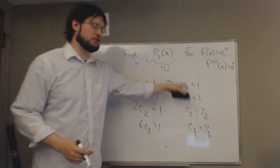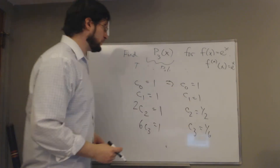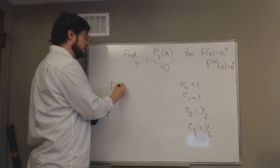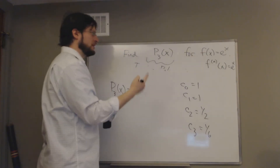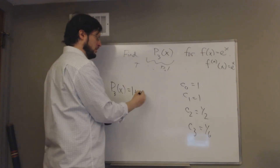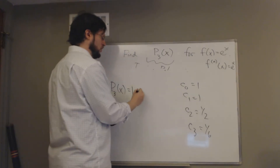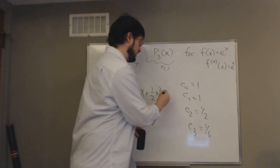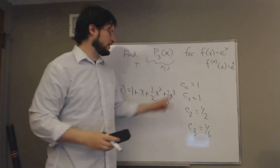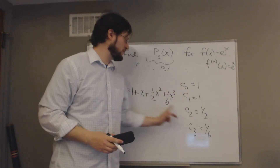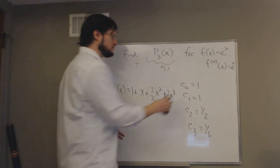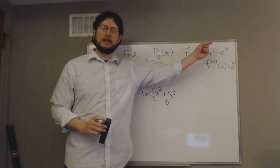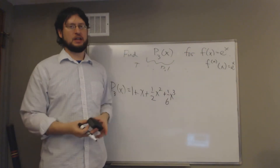So the third-degree Taylor polynomial approximating e^x is P3(x) = 1 + x + (1/2)x² + (1/6)x³. These constants Cn are the coefficients corresponding to x^n. Let's graph e^x and this polynomial together to see that we like the way they match.